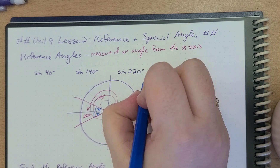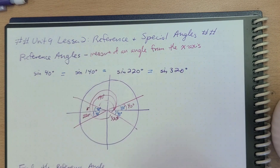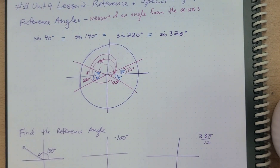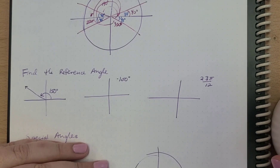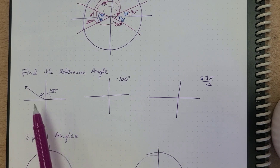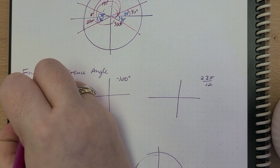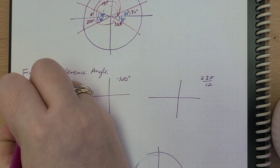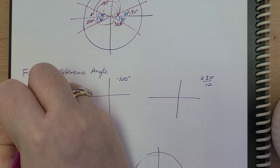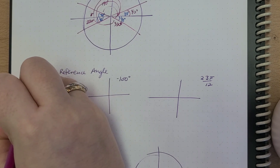360 minus 40 is 320. So all of these have the same reference angle. We can actually find reference angles here. Here we're asked to find the reference angle of 150 degrees. The reference angle is going to be that measure of the angle to the x-axis, which is 180 minus 150 is 30 degrees.